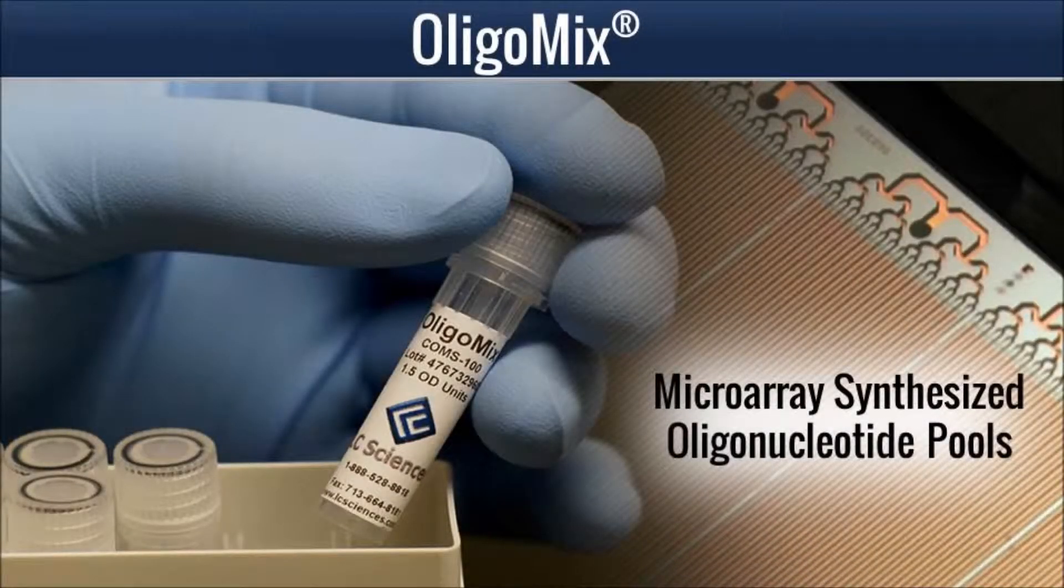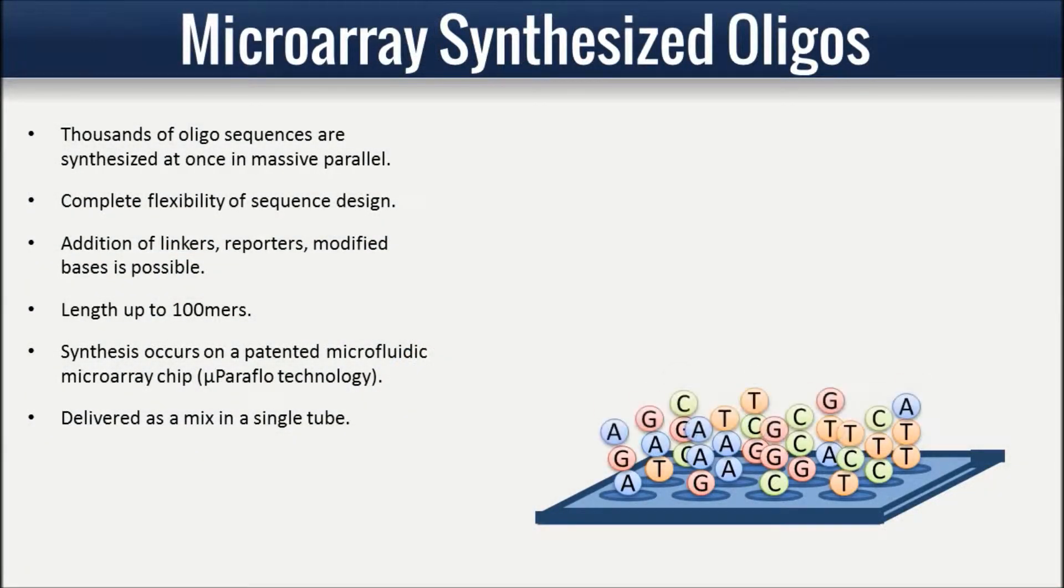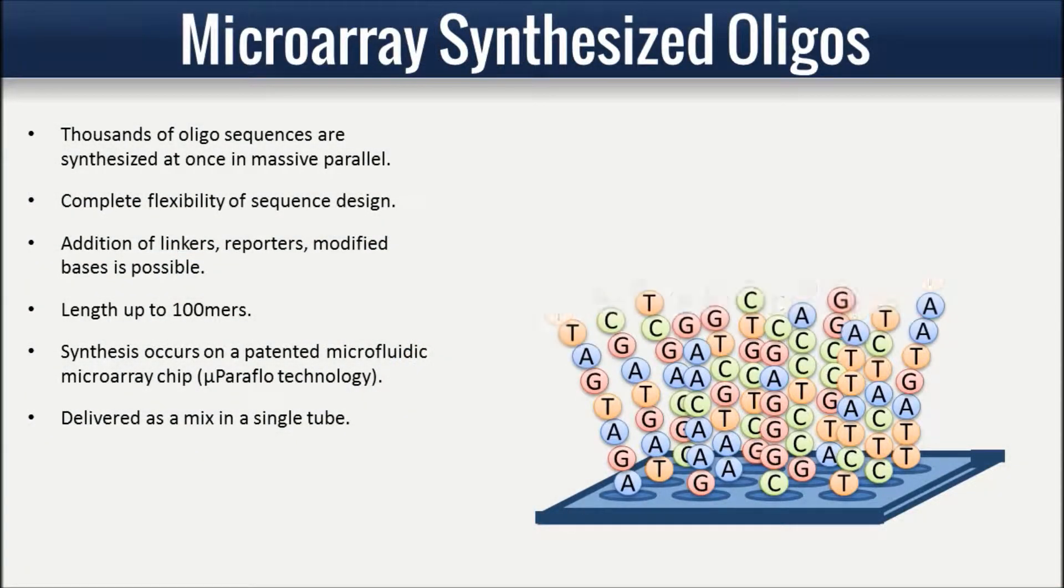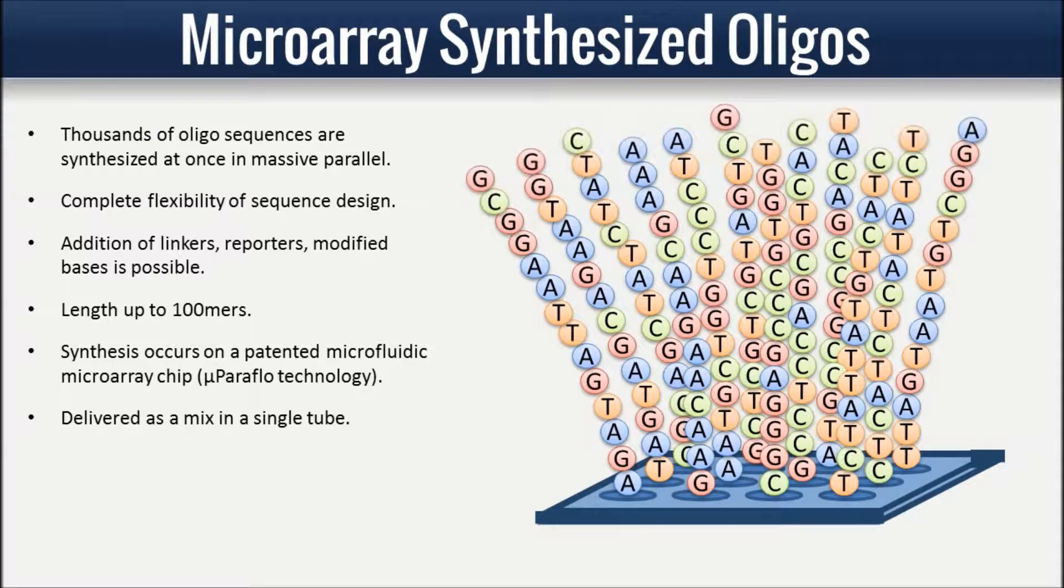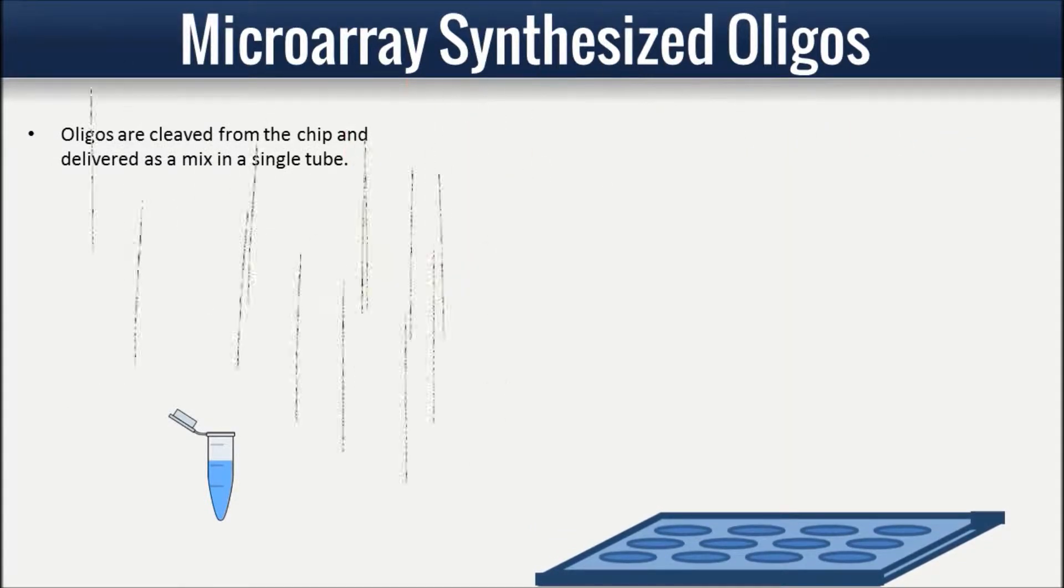OligoMix is a versatile, innovative custom product for genomics discoveries. We synthesize thousands of oligonucleotide sequences at once in massive parallel on a microarray chip, and then cleave the oligos, releasing them into solution in a single microtube.